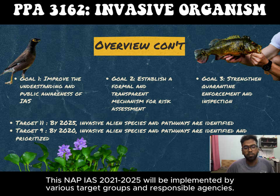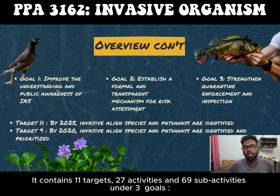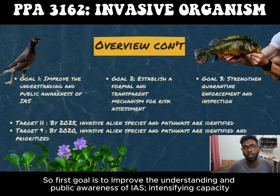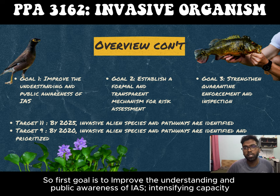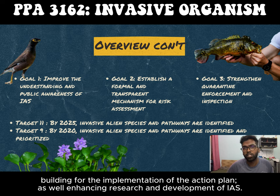The NAP on Invasive Species 2021-2025 will be implemented by various target groups and responsible agencies. It contains 11 targets, 27 activities, and 69 sub-activities under 3 goals. The first goal is to improve the understanding and public awareness of IAS, intensifying capacity building for the implementation of the action plans, as well as enhancing research and development of IAS.